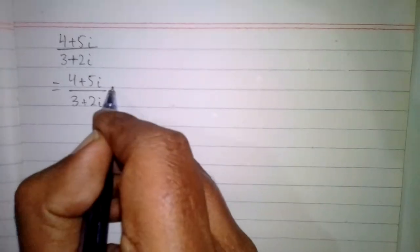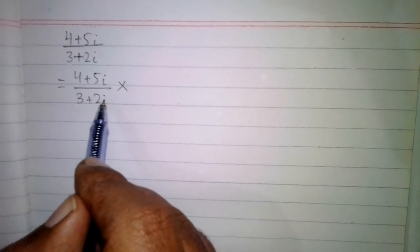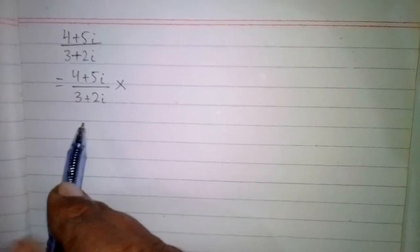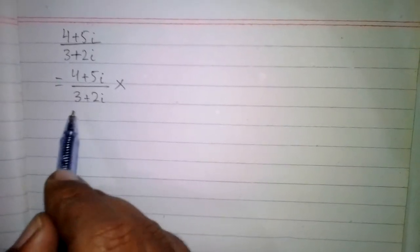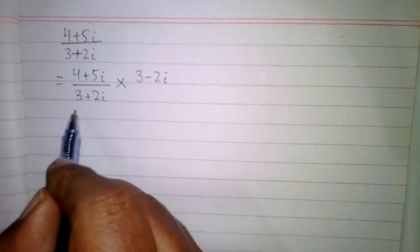In this video we will see how to divide two complex numbers. When we divide a complex number by a complex number, we first write the fraction and then multiply it by the conjugate of the complex number in the denominator. Here we have three plus two iota in the denominator, and we will multiply it by its conjugate.